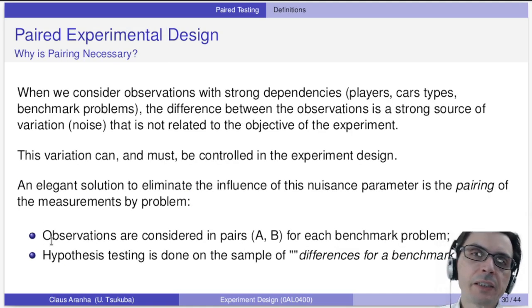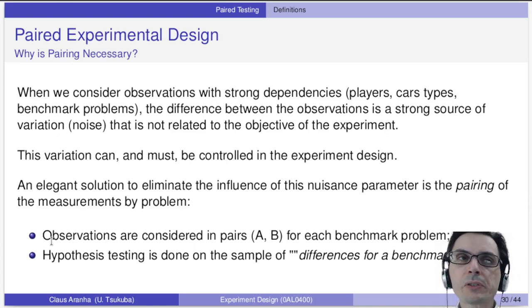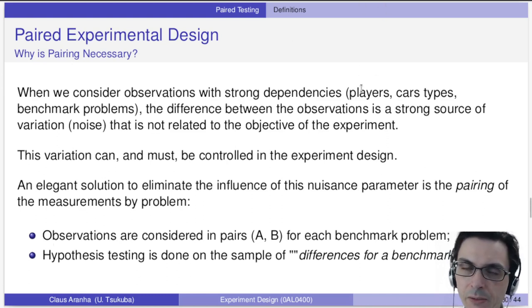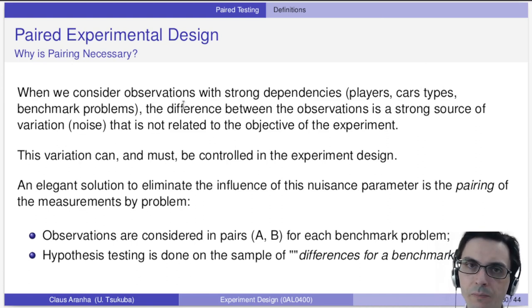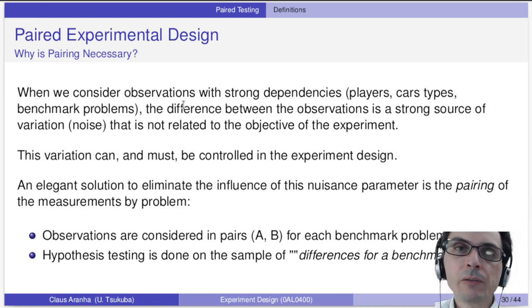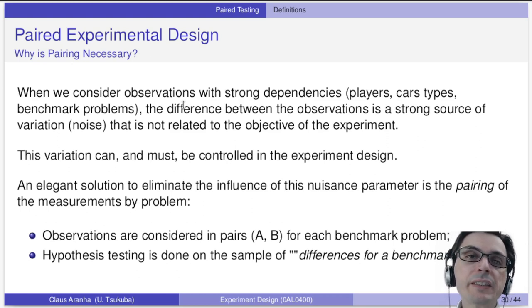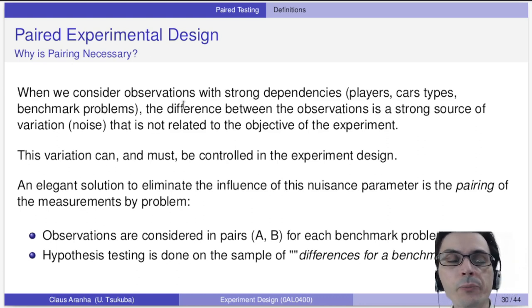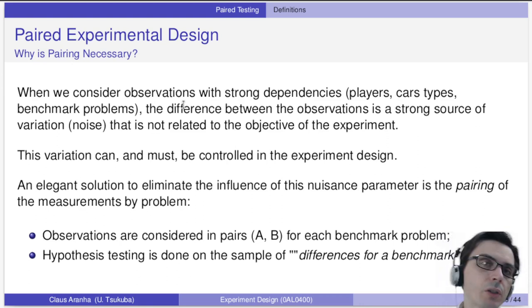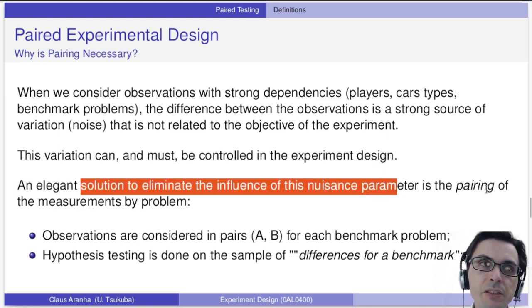Why is pairing necessary? When we consider observations with strong dependencies — players in the football example, cars in the fuel example, benchmark problems in the CS example — the difference between observations is a strong source of noise variation. One big objective of experiment design is to control any source of variation we are not interested in. We are only interested in the different types of shoes, not different types of players. One elegant solution to eliminate the influence of noise parameters is pairing: we consider observations in pairs (A, B) for each benchmark problem, and the hypothesis test is done on the sample of differences.